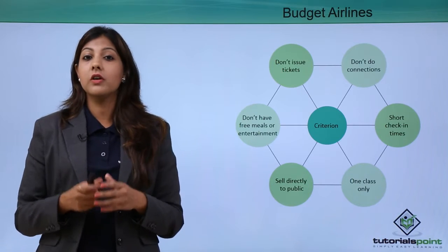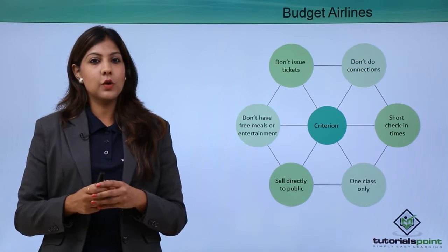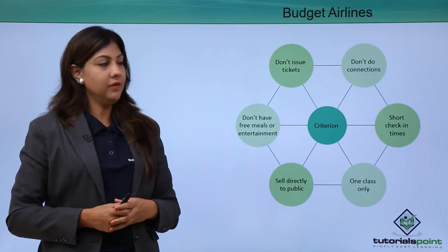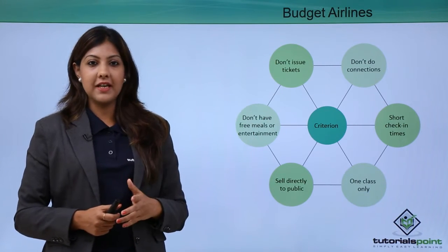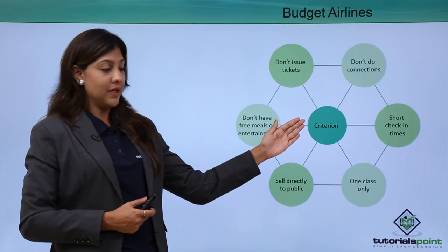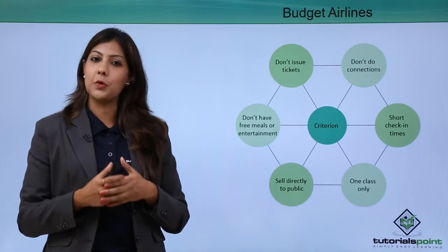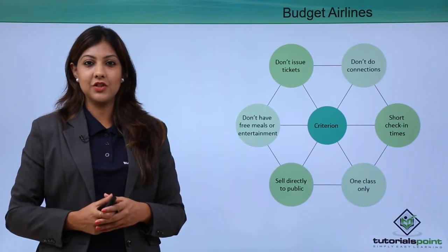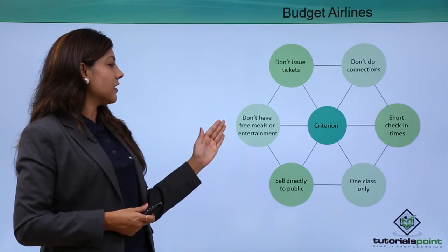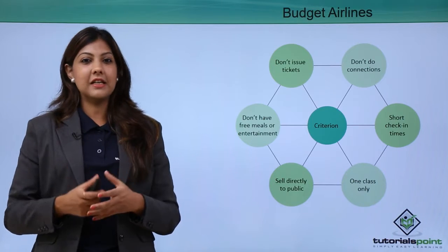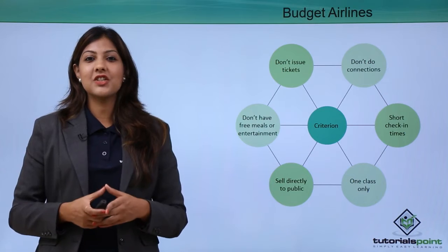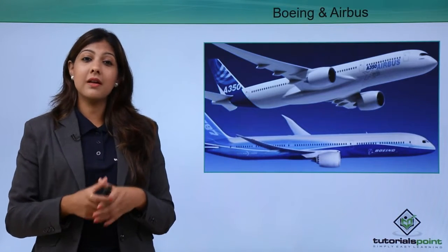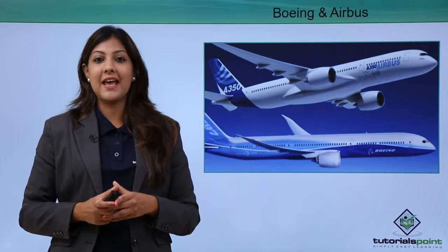Budget airlines offer tickets at very low prices and operate under specific criteria. They do not issue paper tickets, offer only direct flights with no connections, have shorter check-in timings, and offer only economy class — no first or business class. They sell directly to passengers without travel agencies and provide no free meals or in-flight entertainment. Many budget airlines operate both domestically and internationally under these criteria.